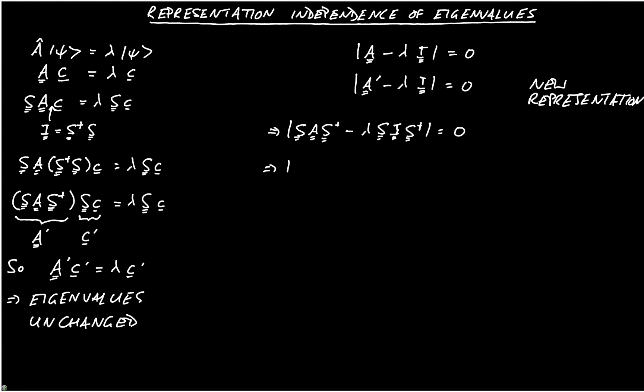We can now factorise and say that that's equal to S multiplying A minus lambda I multiplying S dagger is equal to zero.